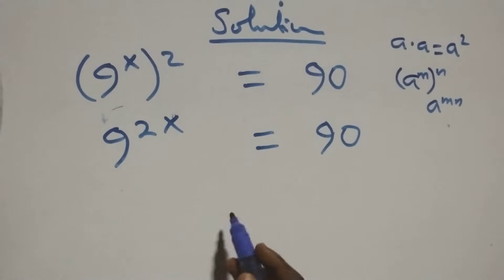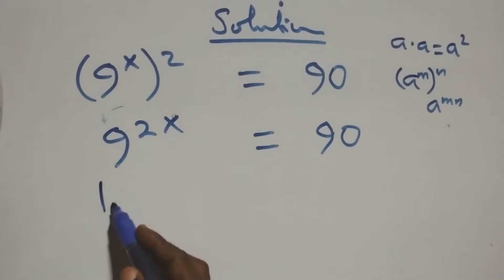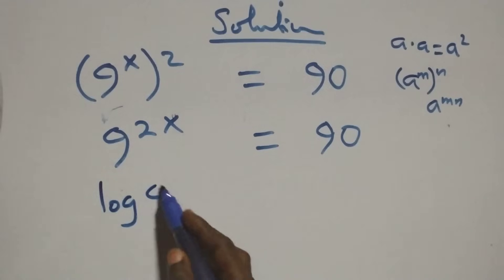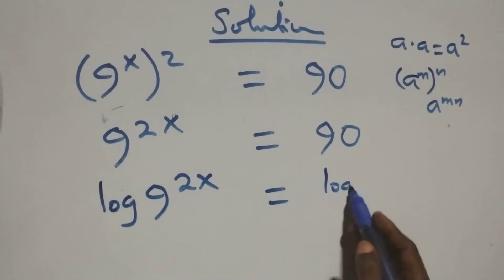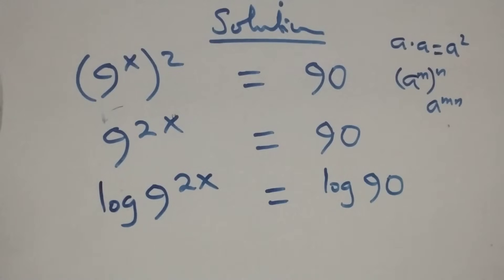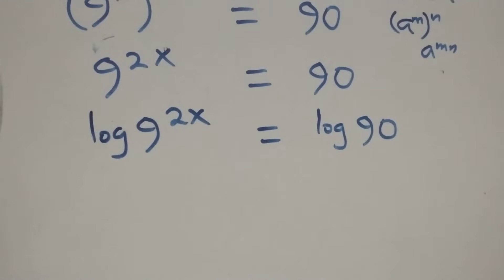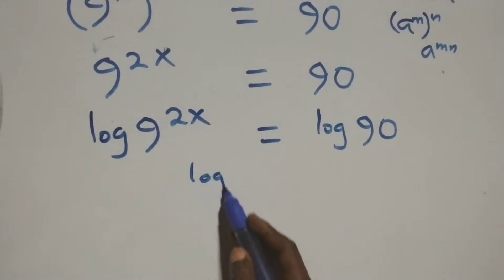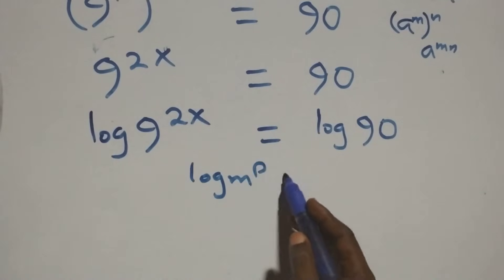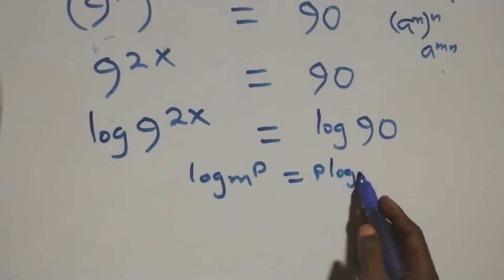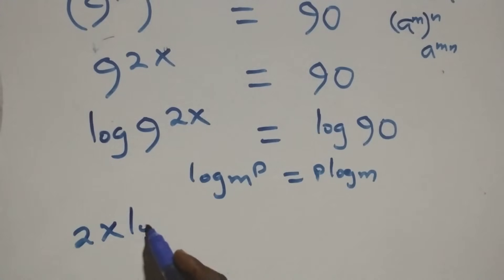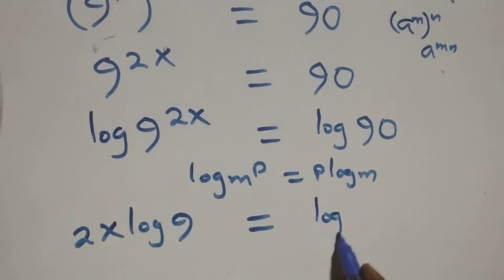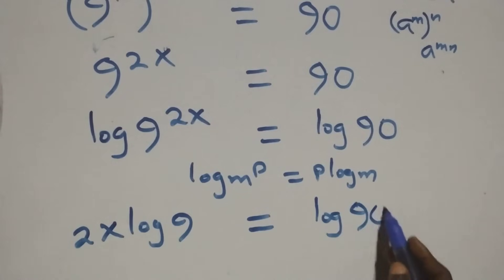Then, next step here, we take the log on both sides. That is, we have log of 9 raised to power 2x equals log 90 on this side. The next step, we apply the power rule of logarithm: when we have log m raised to power p, this is the same thing as p log m. That is, here we have 2x log 9 equals log 90 on this side.